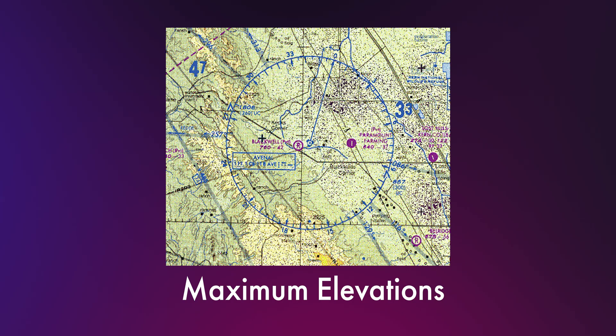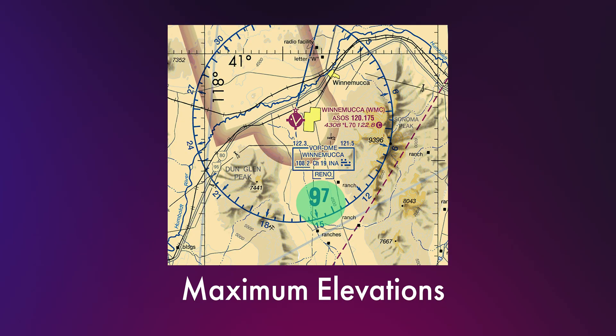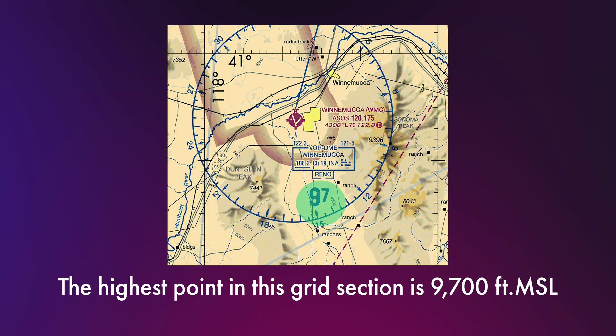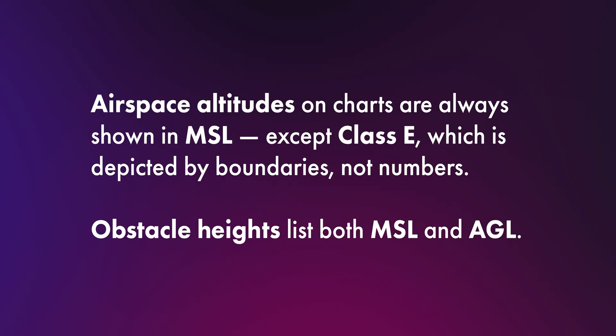Let's talk about maximum elevation figures, or MEF. In each grid square you'll see a big number like 97. That means the highest point — whether terrain or man-made obstacle — in that section is 9,700 feet MSL. Again, we add two zeros to get that number. Airspace altitudes on charts are always shown in MSL.